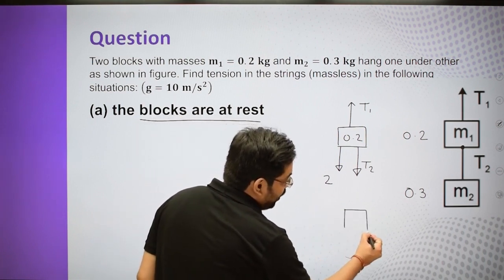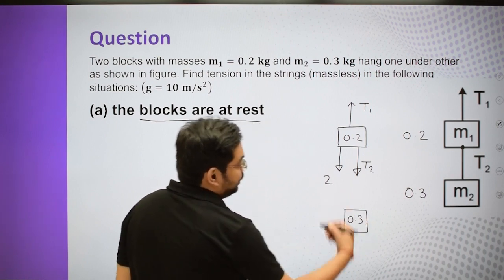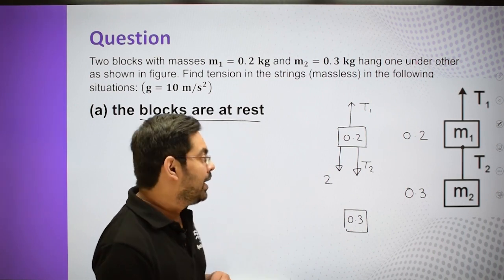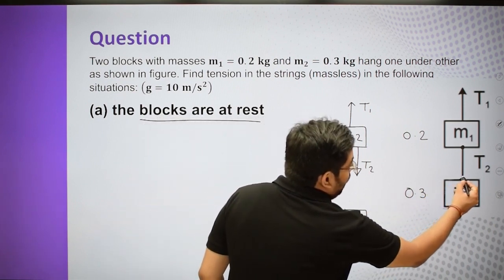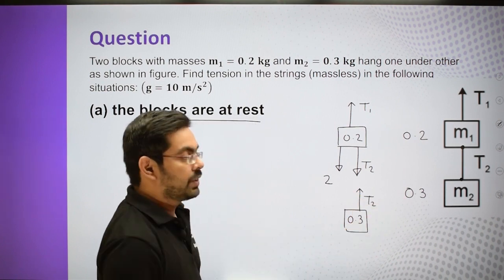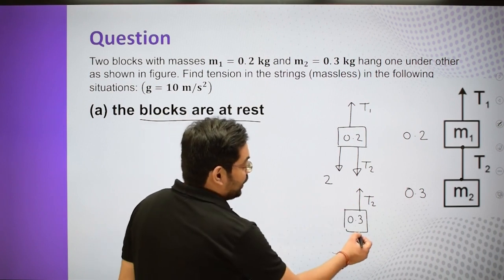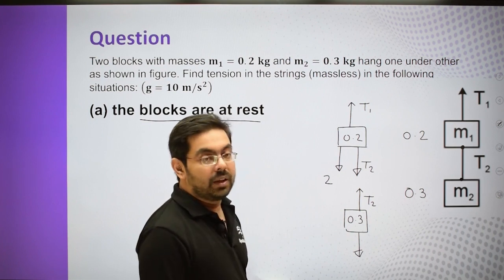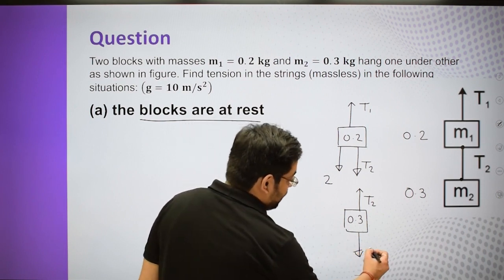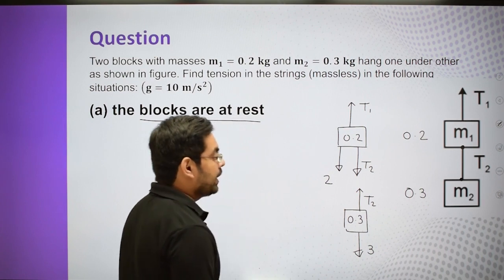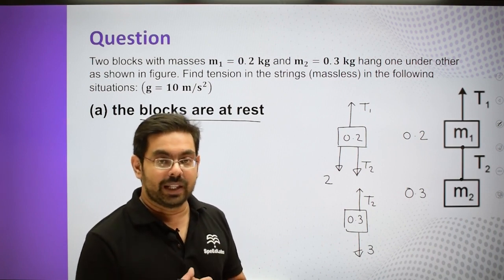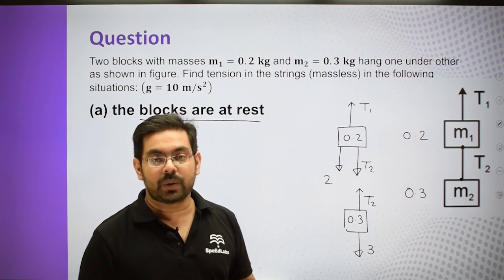For block M2 (lower, 0.3 kg): T2 acts upward from string 2, and M2g = 0.3 × 10 = 3 Newton acts downward. No other contact forces. The free body diagrams of both blocks are now complete. We apply equilibrium conditions and calculate T1 and T2.